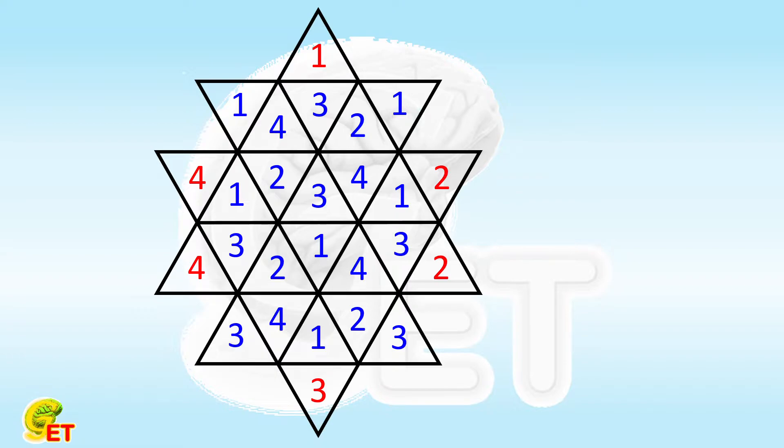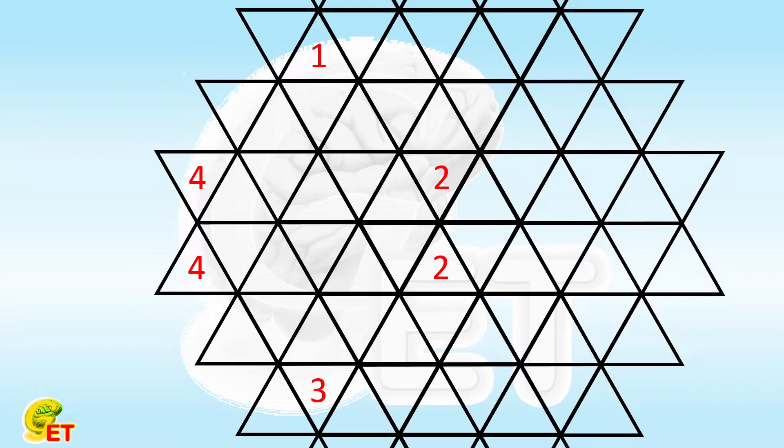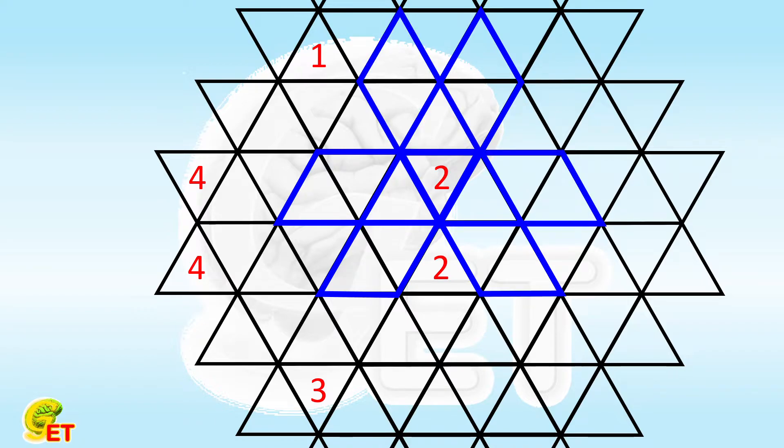To make the problem more interesting, let's expand the figure a little bit. Now, let's focus on the number 2 in the middle. For any 4 small triangles connected together on a straight line where this 2 is located, there cannot be another 2. So, we might mark these positions where number 2 cannot appear.